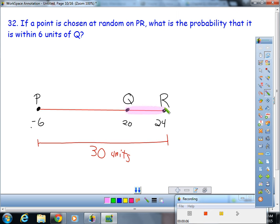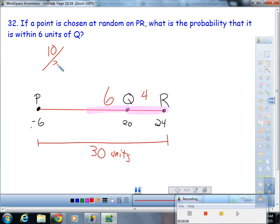There are six units to the left of Q that work. So it looks like we have a total of 10 successful units over 30. 10 over 30 is one third, which is 33.3 repeating percent.